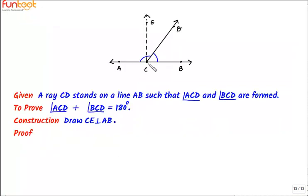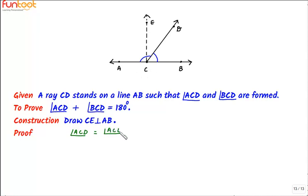Let's start the proof. Angle ACD is equal to angle ACE plus angle ECD. Call this our first equation.